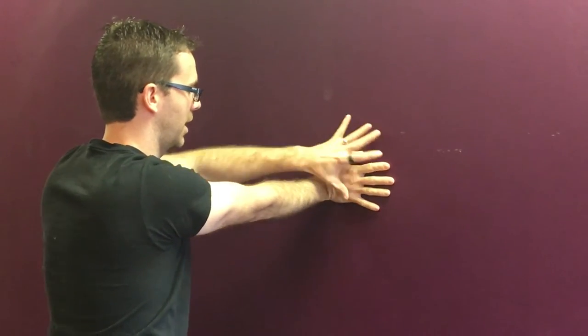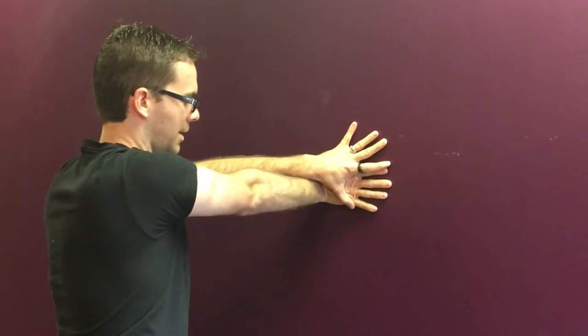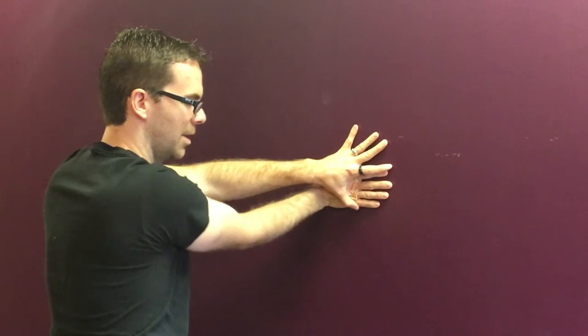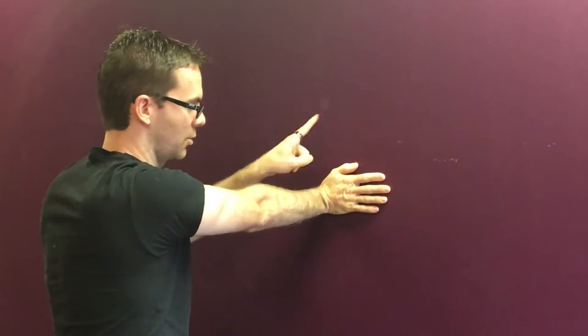Then you're going to change the position of your hand. You're going to go to the locked out position, circle. Again, three to five circles each direction.